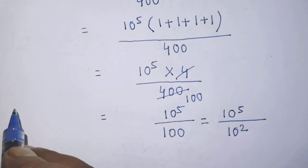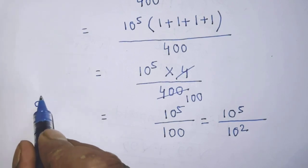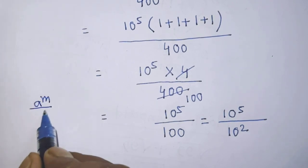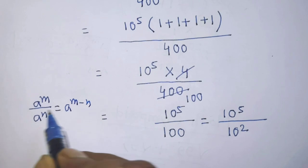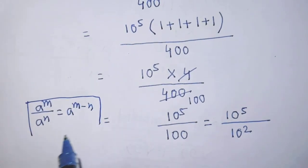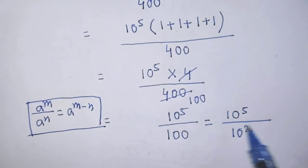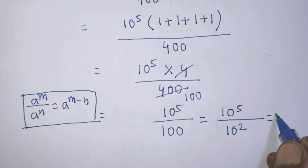To simplify this algebraic expression, we have to apply the formula: a to the power m over a to the power n is equal to a to the power m minus n. According to this formula, it will be 10 to the power 5 minus 2.